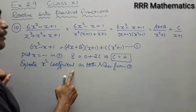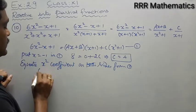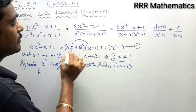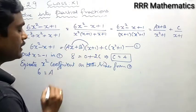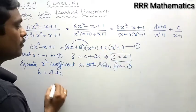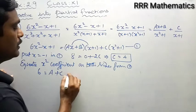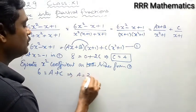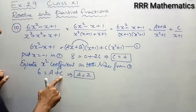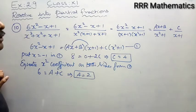Equating x² coefficients on both sides from equation 1: on the left, the coefficient of x² is 6. On the right, from (ax+b)(x+1) we get ax², so the x² coefficient is a; from c(x²+1) we get cx². So a + c = 6. The value of c is 4, so when we replace c with 4: a + 4 = 6, giving a = 2.